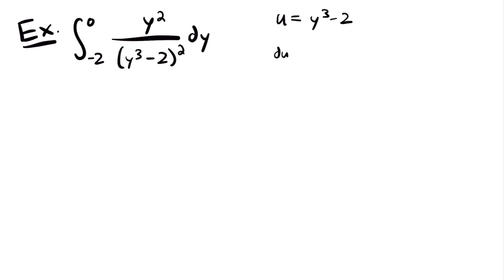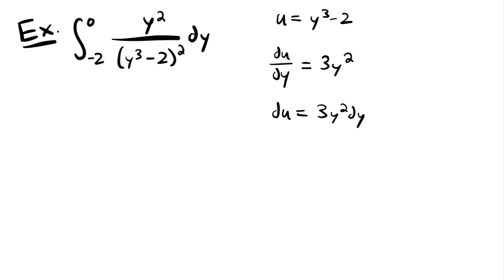Taking the derivative — note this is defined with y, not x — du/dy equals 3y squared. The derivative of negative 2 is 0. Multiplying both sides by dy: du equals 3y squared dy. Looking at our integral, we don't see a 3, but we do see y squared dy. Dividing both sides by 3 gives du divided by 3 equals y squared dy, which we can find in the integral.